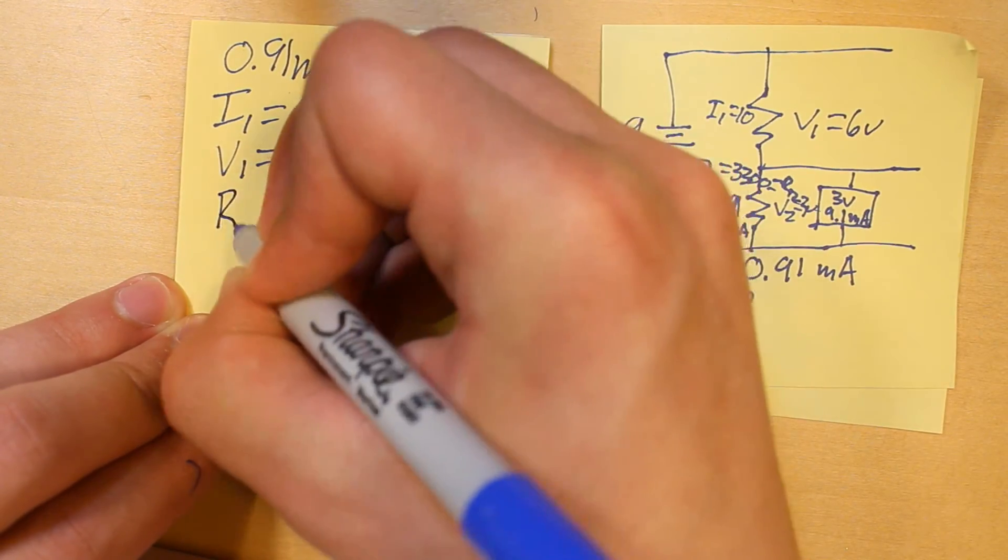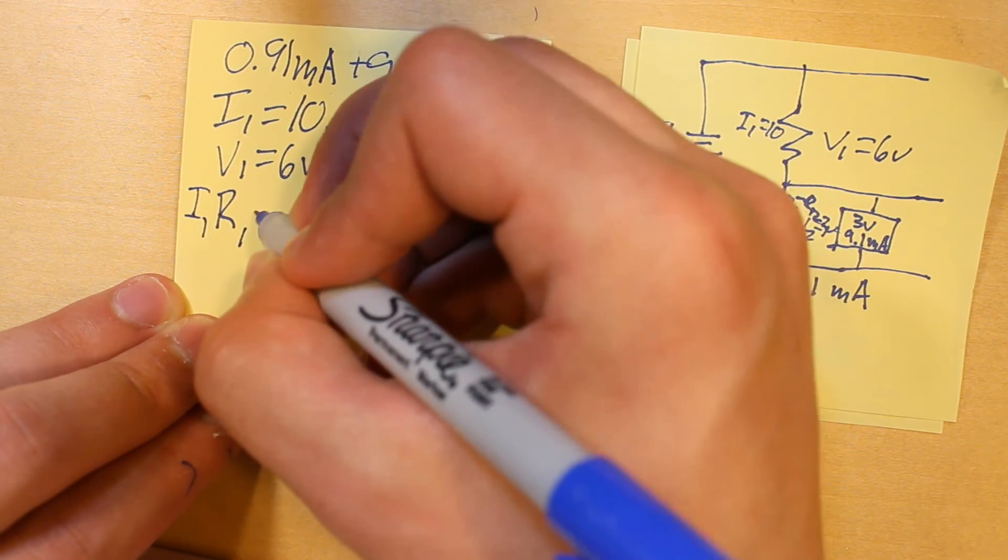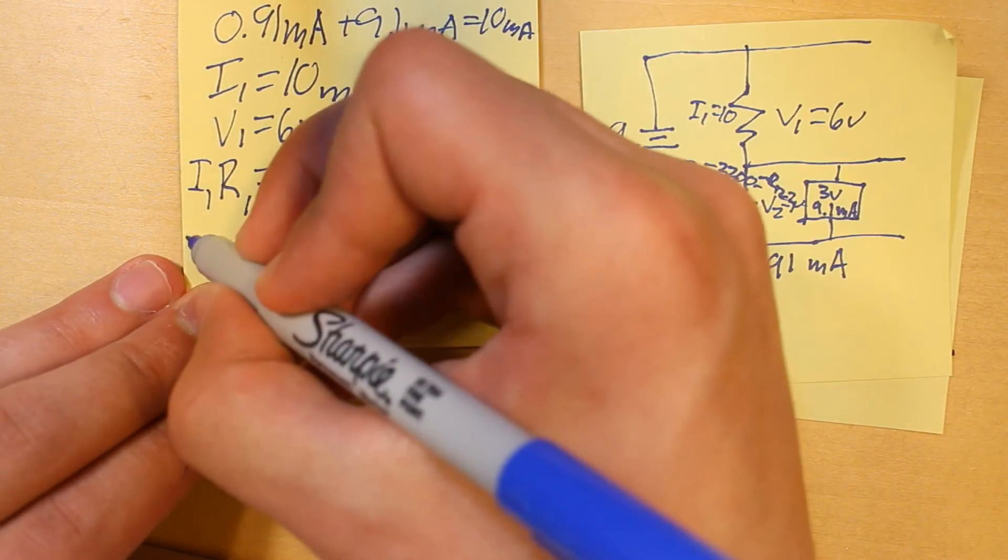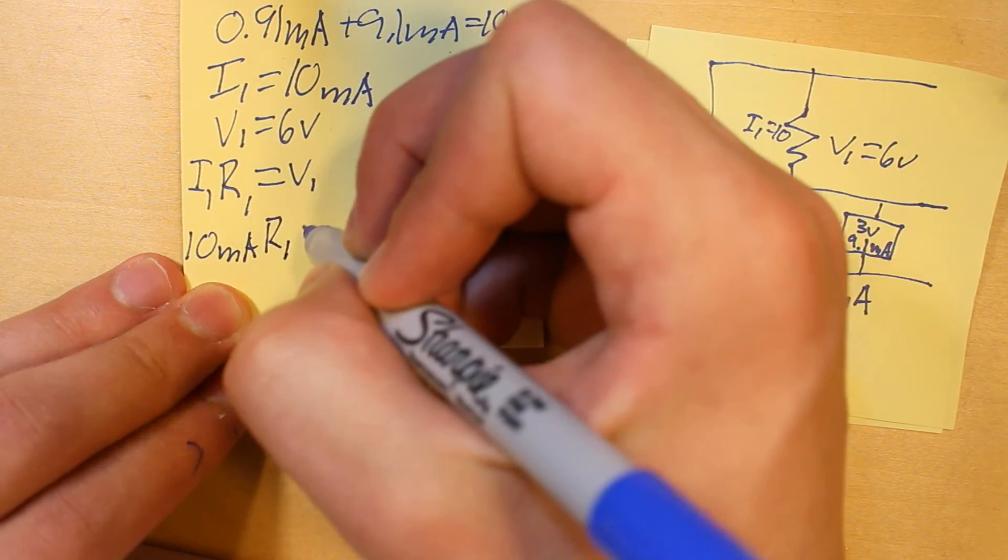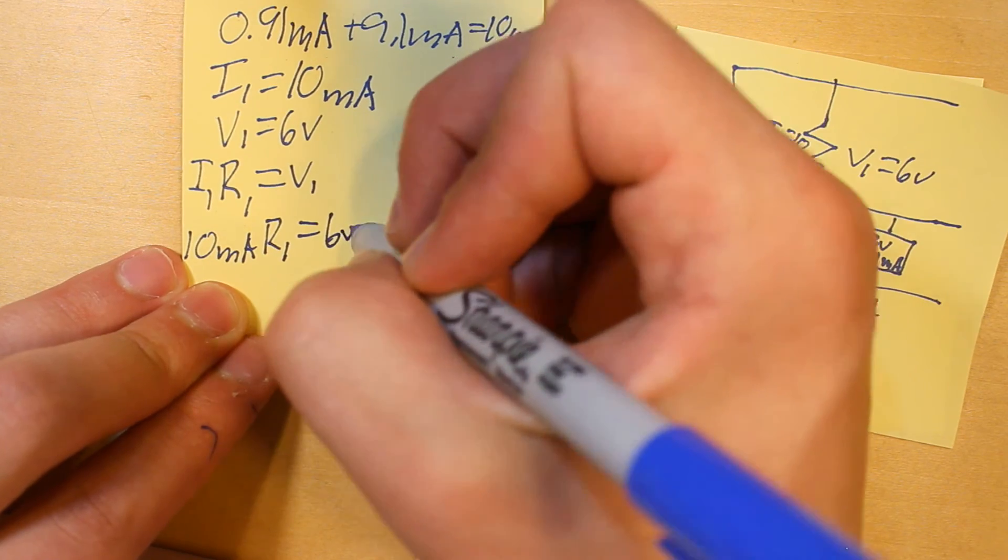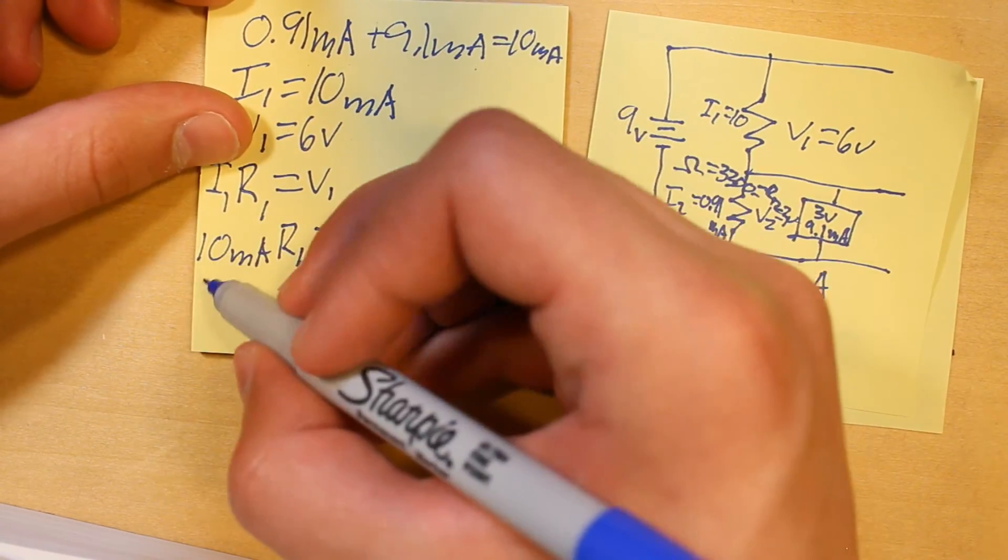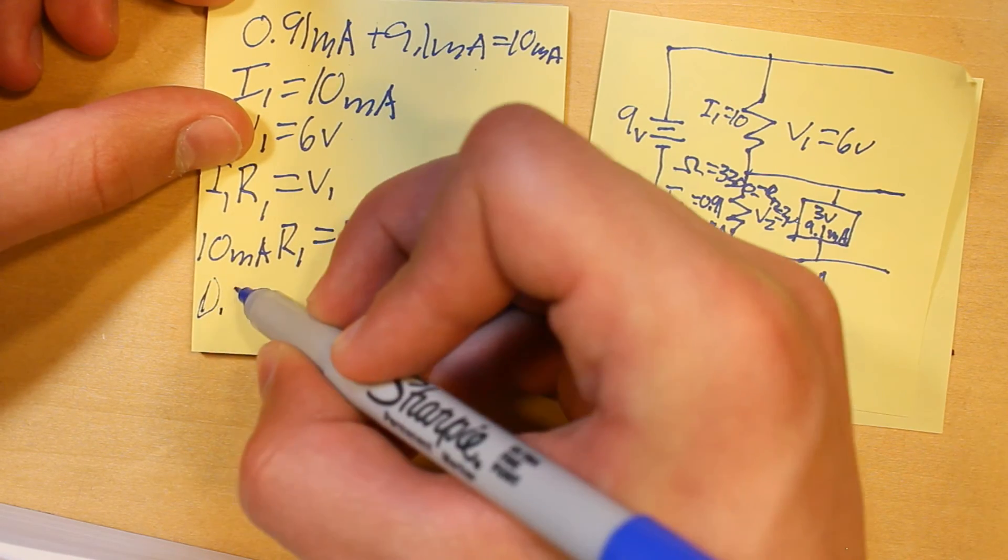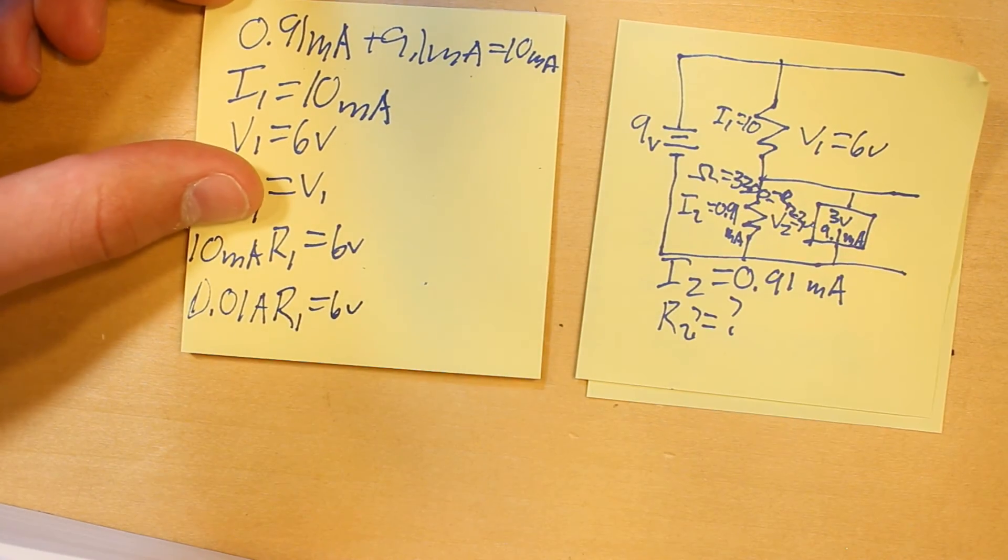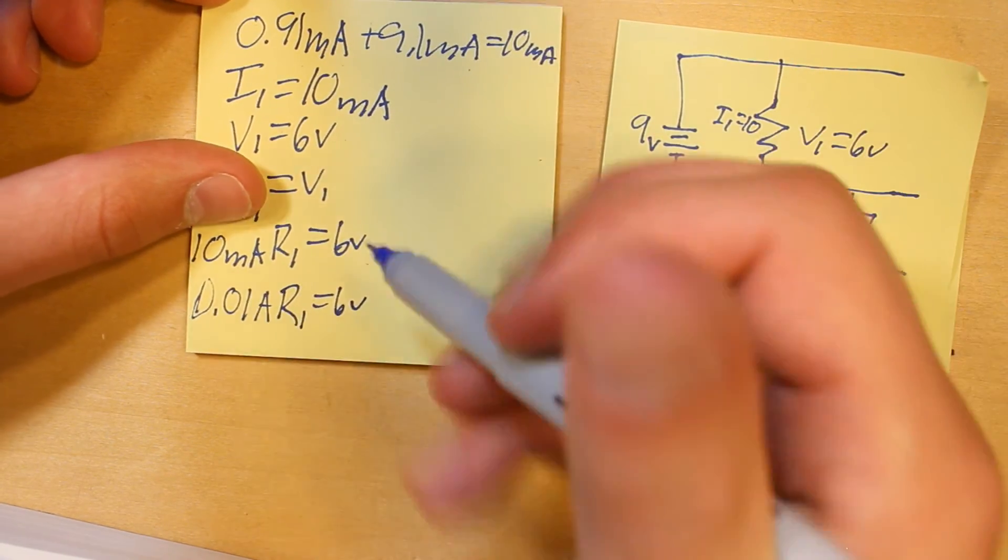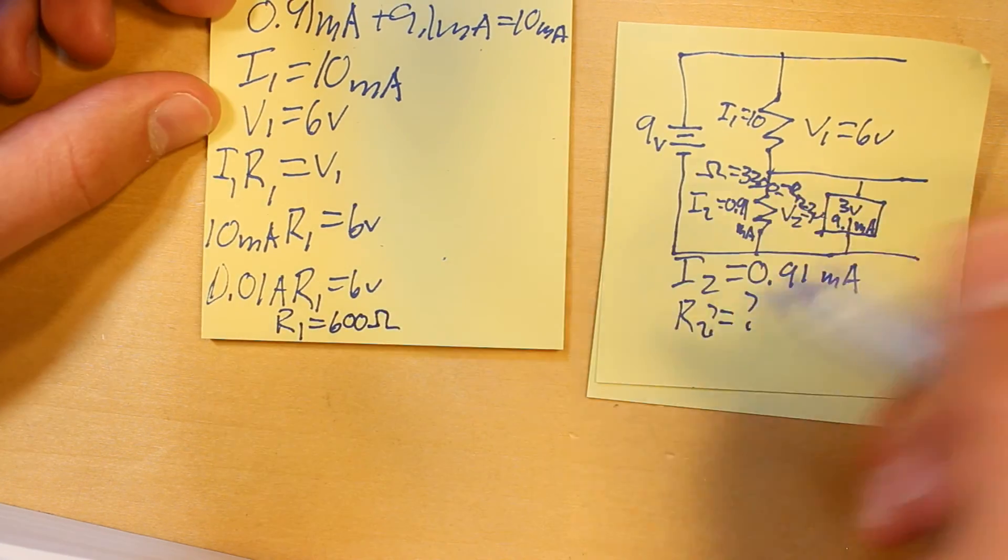So, now that we know from before V1 equals 6 volts, now that we know I1 and V1, it's possible to use Ohm's law to solve for R1. So, we can just say I1 times R1 equals V1, and we know I1, which is 10 milliamps, times R1, which is our variable, and 6 volts, which is V1. Remember, we need to convert this to amps, so it's going to be 0.01 amps, times R1 equals 6 volts, and then this is just going to be like multiplying by 100, so R1 equals 600 ohms, simple as that.